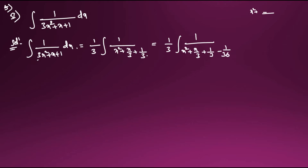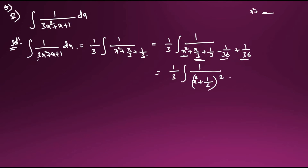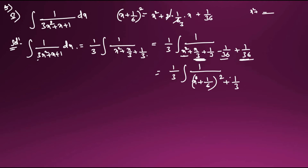Inside the denominator: x² + x/3 + 1/3. I add and subtract (1/6)² = 1/36 to complete the square. So x² + x/3 + 1/36 - 1/36 + 1/3 = (x + 1/6)² + (1/3 - 1/36). The term 1/3 - 1/36 = 12/36 - 1/36 = 11/36.